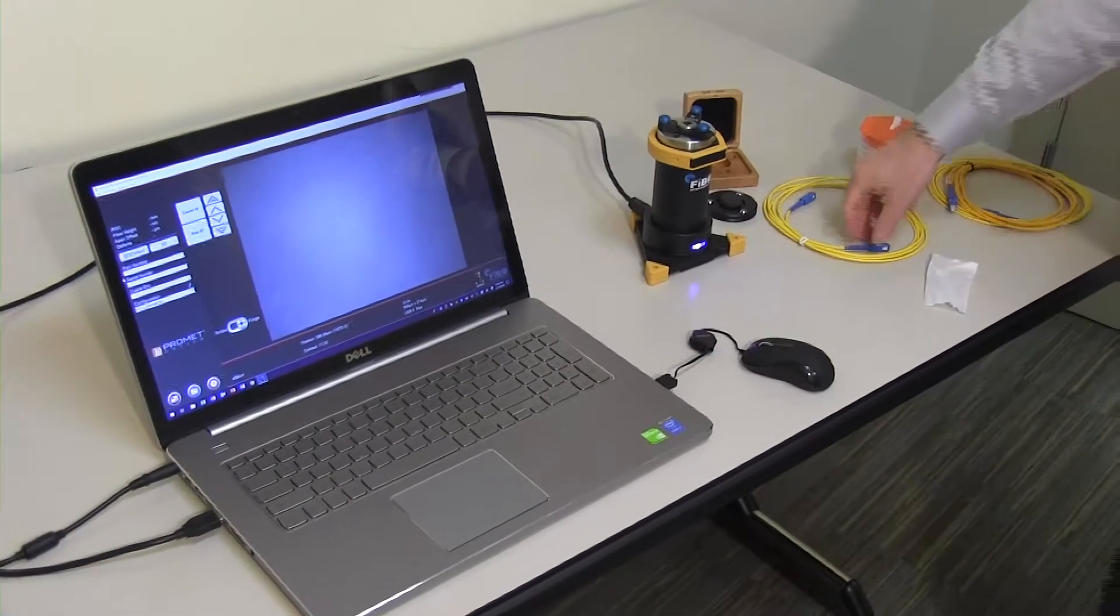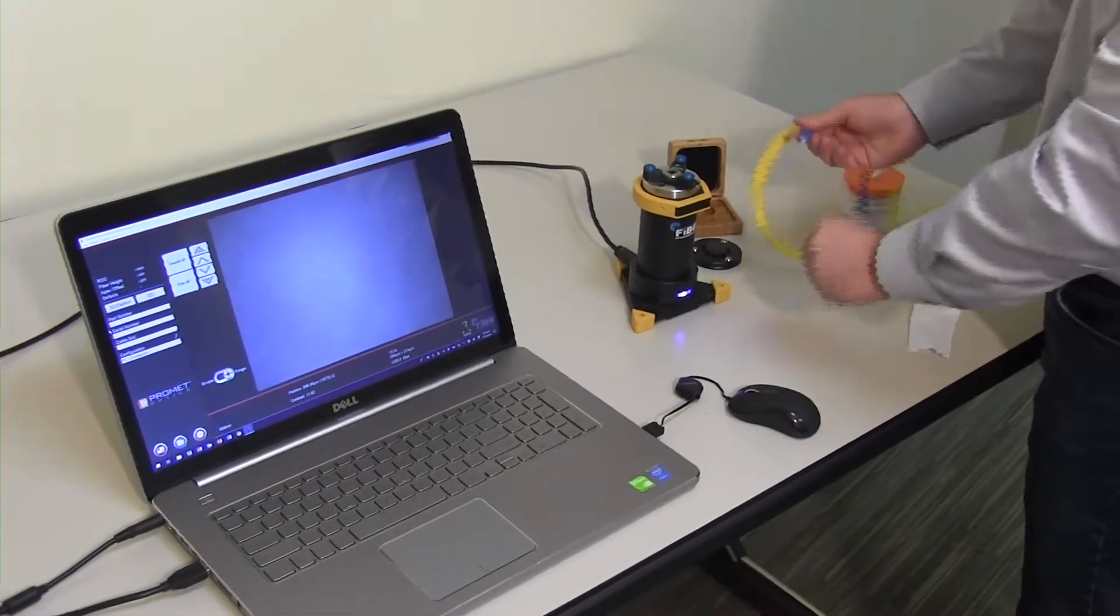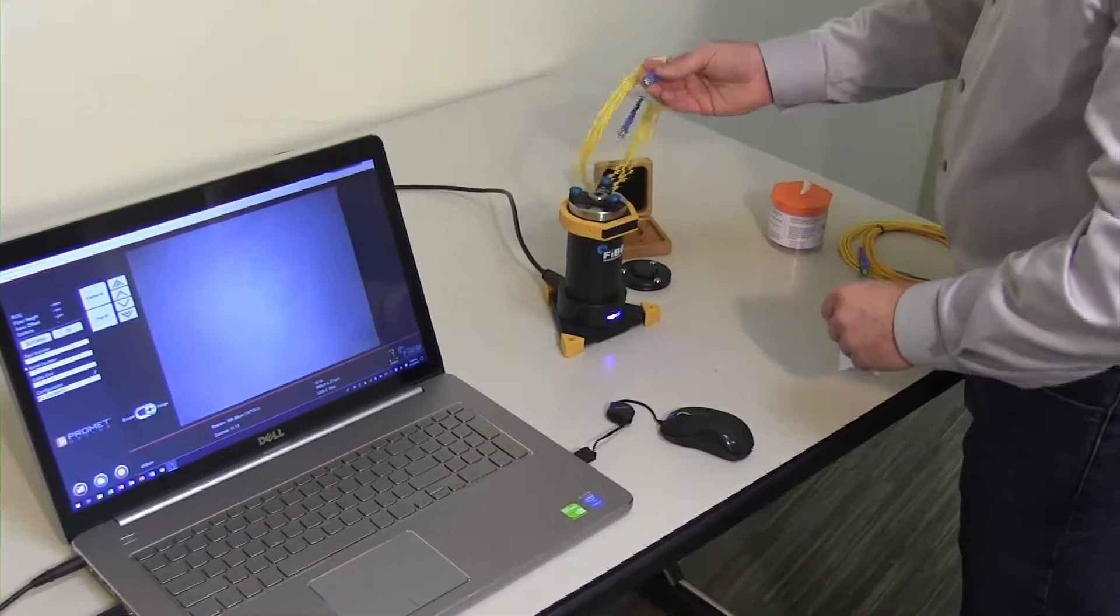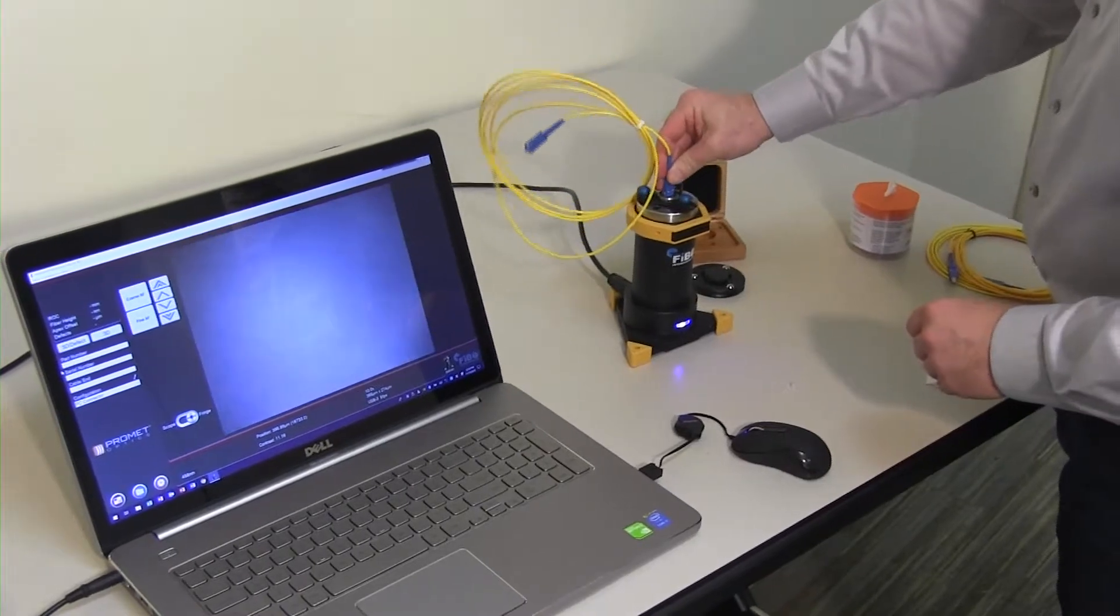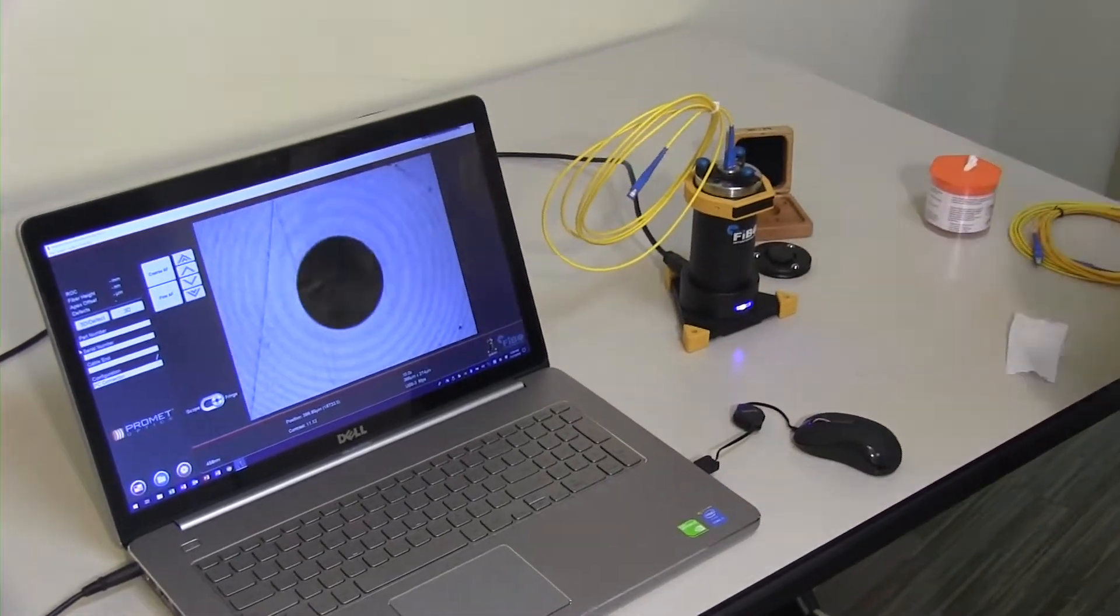The interferometer is the only instrument that can analyze, map, and document the physical surface geometry of a ferrule end-face to determine its suitability for use in a fiber optic system. Any defects are easily discovered, so corrective action can be taken if necessary.